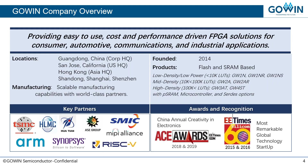A brief overview of Gowin Semiconductor. Gowin was founded in 2014. Our executive headquarters is located in San Jose, California, and our operational headquarters is located in Guangzhou, China. We have over 160 people employed in R&D, engineering, and administration. We serve the low to mid-range density markets for FPGA needs from 1K LUTs to 100K LUTs.